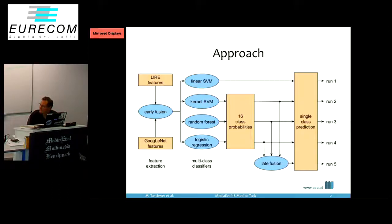But in addition, we had a fifth run that was produced by combining the output of kernel SVM, random forest and logistic regression by a late fusion approach doing soft voting on the 16 class probabilities output by the single classifiers. And then doing a maximum likelihood prediction to obtain final results for the fifth run.